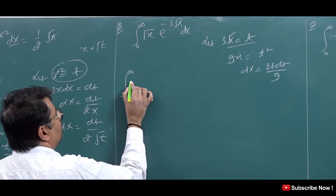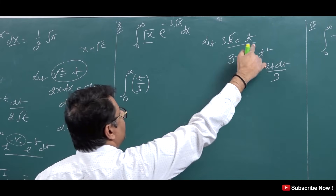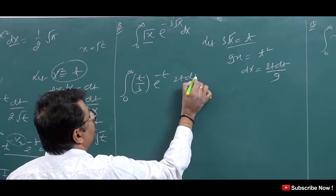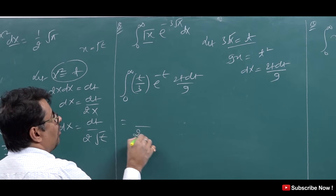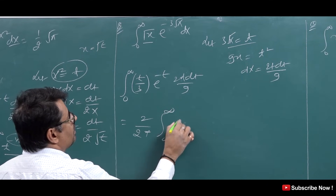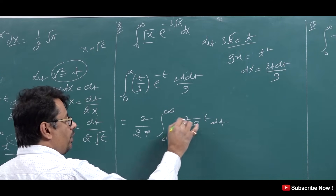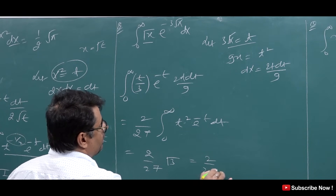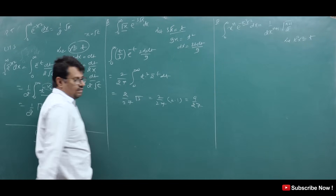Substituting into ∫₀^∞ √x · e^(−3√x) dx: we get ∫₀^∞ (t/3) · e^(−t) · (2t dt/9). This gives (2/27)∫₀^∞ t² e^(−t) dt. The power is 2, so adding 1 gives Gamma(3). So the answer is (2/27)·Gamma(3) = (2/27)·2! = (2/27)·2 = 4/27. That is the right answer.